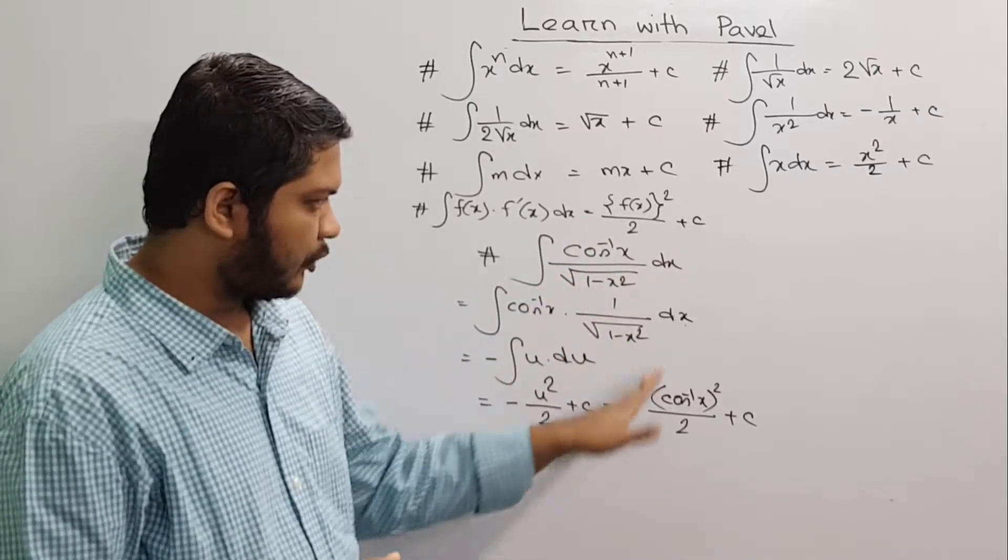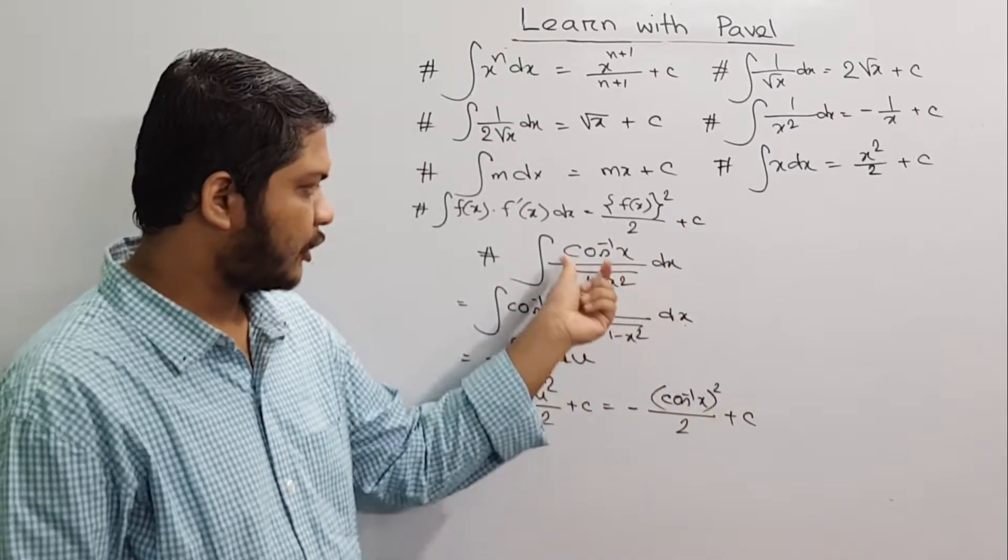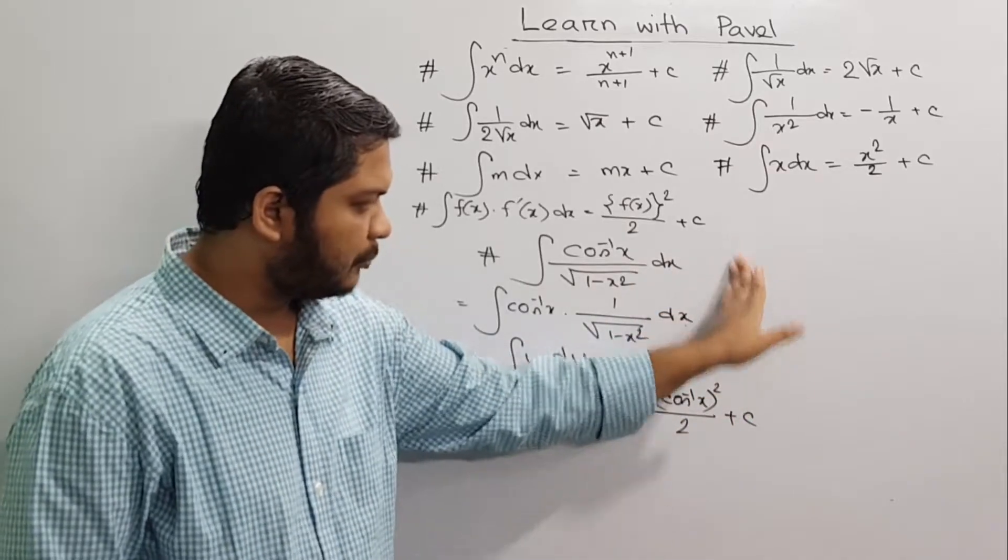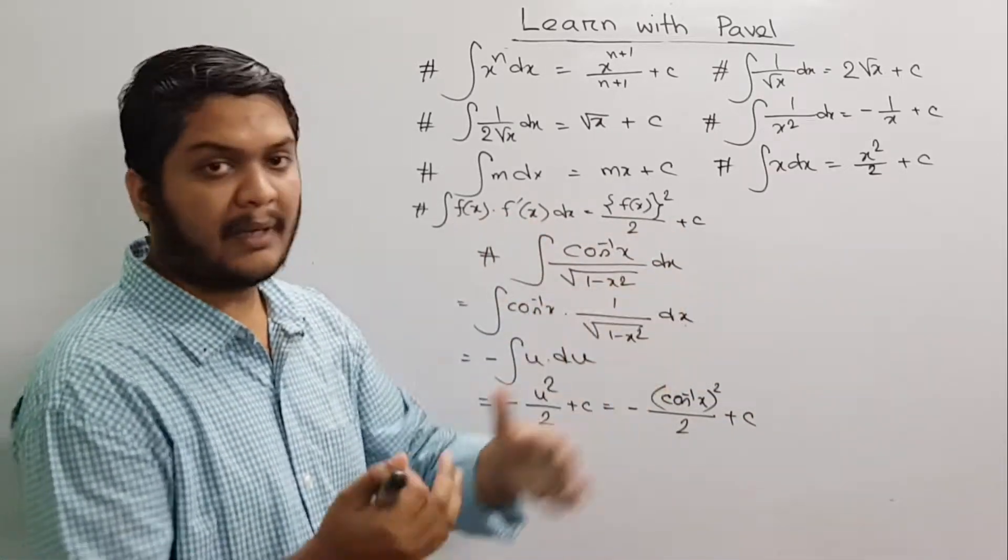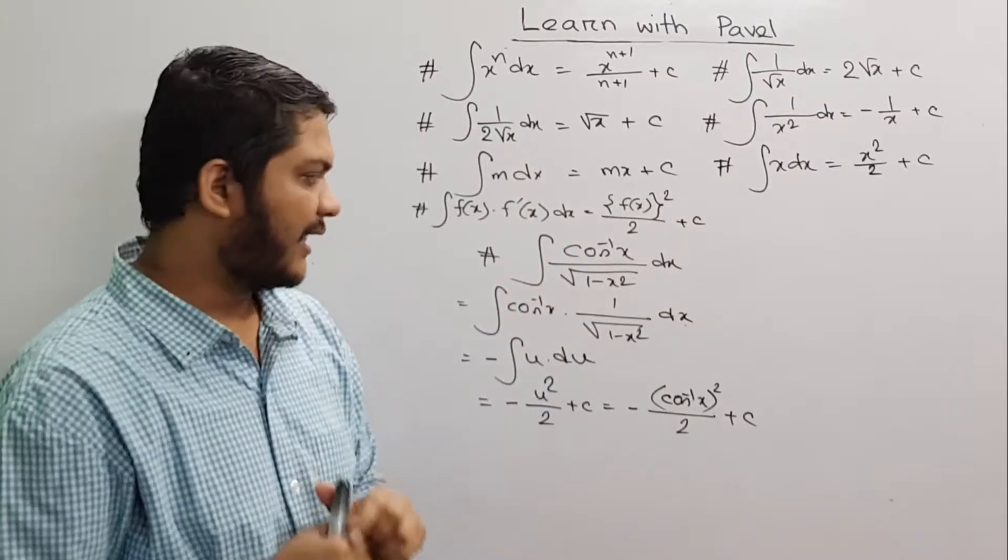We have solved this problem and we have replaced the same thing as let cos inverse x equal to u. We have a lot of the same thing, so we can compare it to this form.